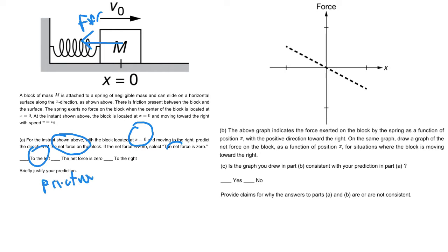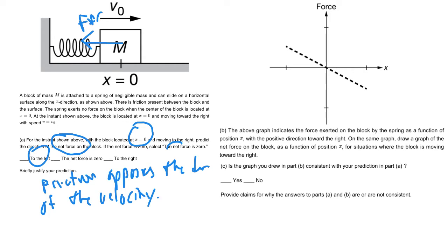Friction opposes the direction of the velocity. We also know there is no spring force at equilibrium — at the x equals zero point. The problem actually states there is no spring force there, so the only force acting is friction. Therefore, the net force is directed to the left.